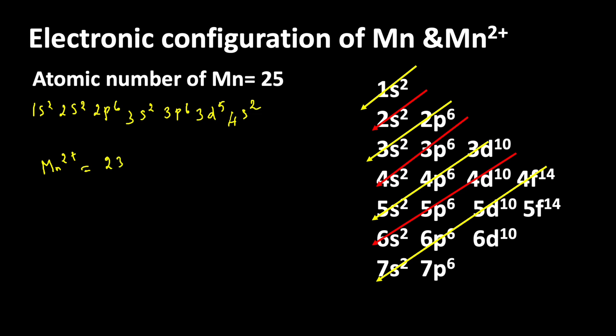Now let us write for Mn2+: 1s2, 2s2, 2p6, 3s2, 3p6, then 3d5. Because in Mn2+ the electrons lost are from the 4s orbital. This is the outer shell orbital. So this is the complete electronic configuration of Mn2+.